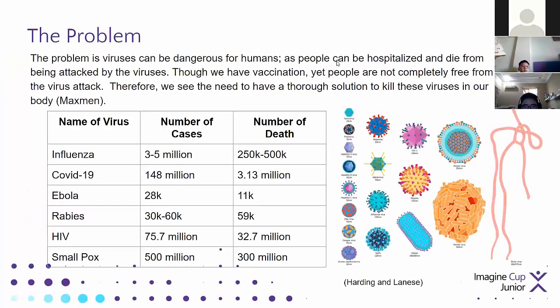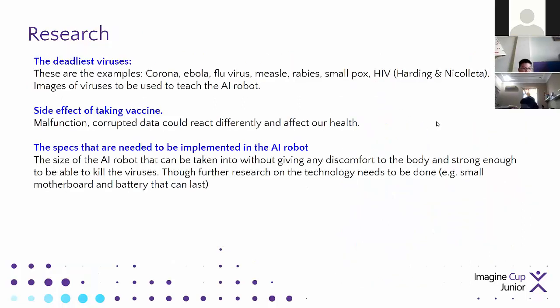The problem is that viruses can be very dangerous for humans and people might die from them. Though we have vaccination, not all people can survive. These are the names of viruses, number of cases, and their deaths, and these are examples of how these viruses live.